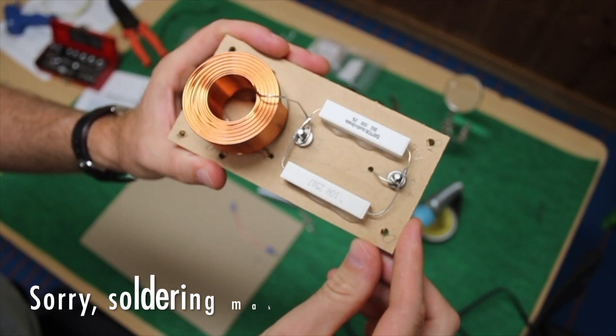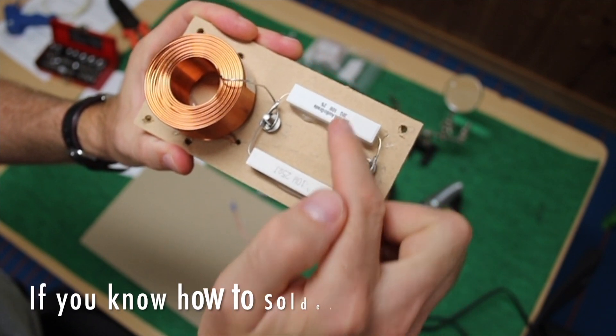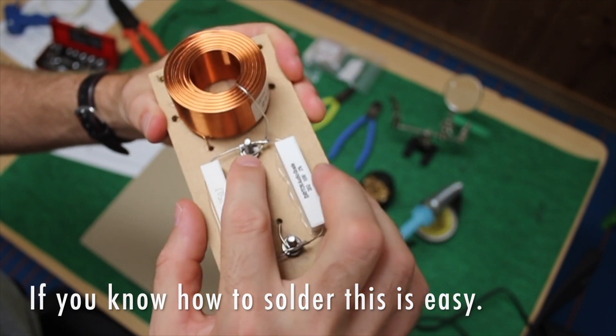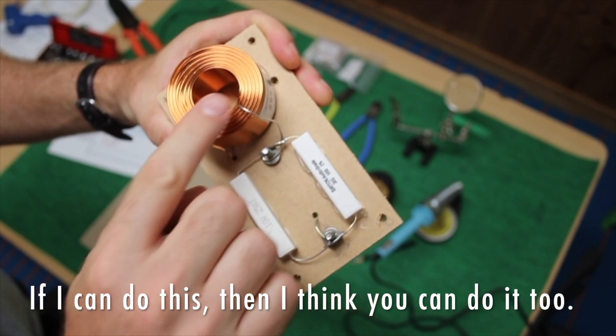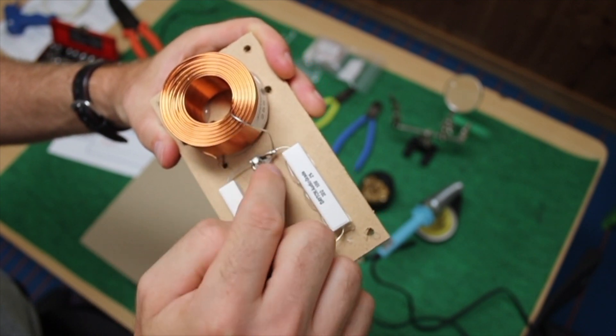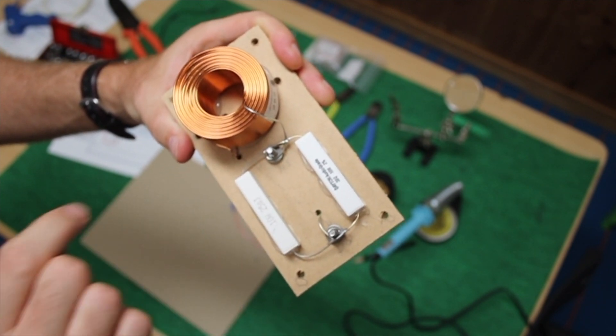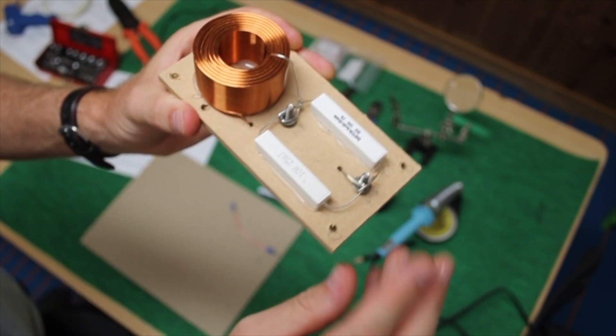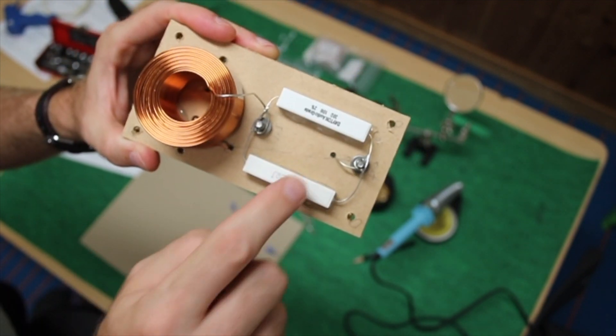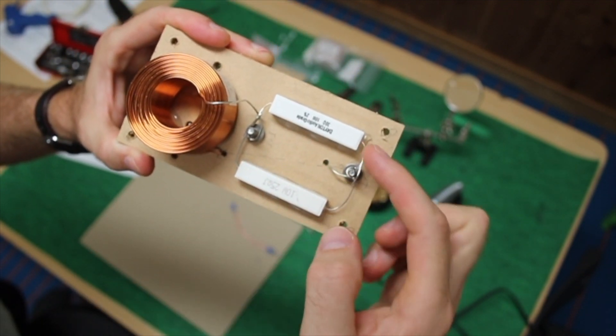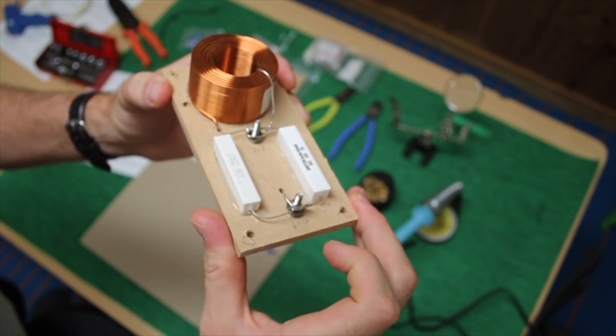So I finished soldering these, and I forgot to do it on camera. My resistors are both glued down, as you saw, and they cross over here. One of the inductors ends wraps around, and those are all soldered together. The other end of the inductor goes through this hole across the bottom, back up here, and meets the other ends of the resistors.